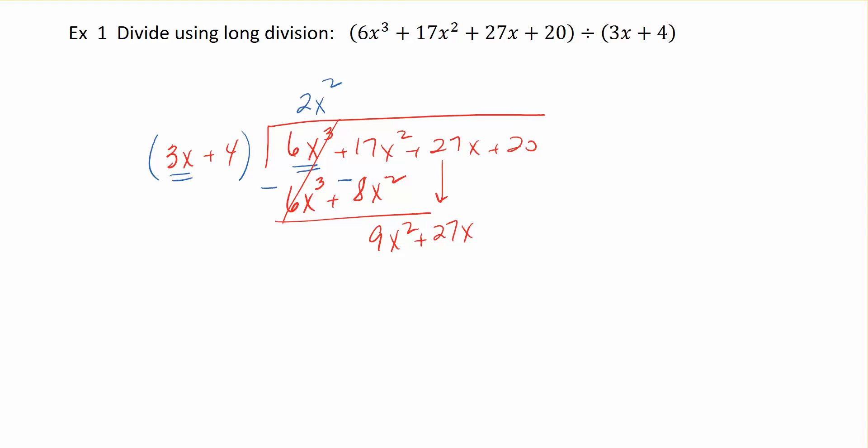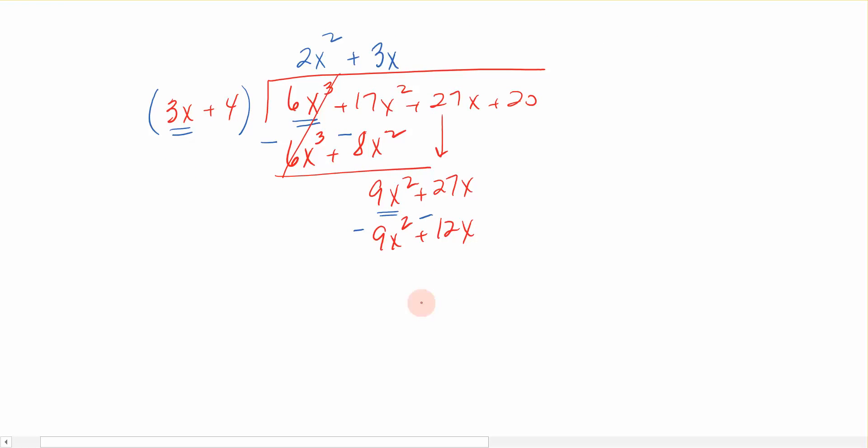You ask yourself, what do I multiply 3x by to turn it into 9x squared? That should be 3x. So 3x times 3x is 9x squared, and 3x times 4 is 12x. But don't forget to change your signs. My 9x squared cancels out, and I have 27x minus 12, which gives me 15x, and we bring down plus 20.